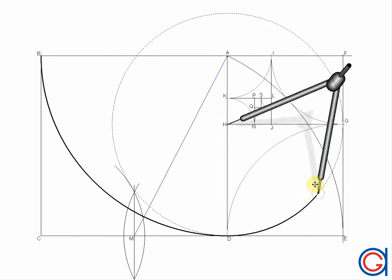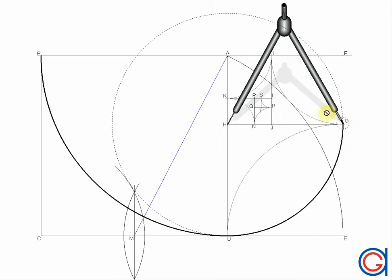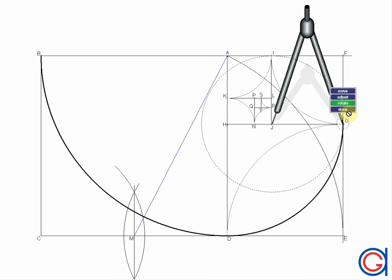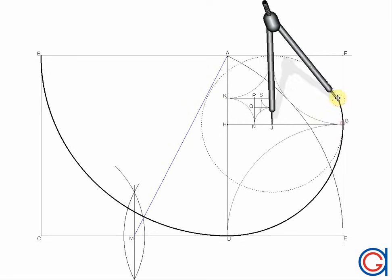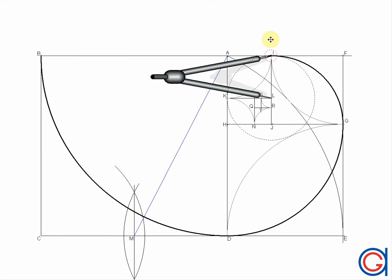Now with our compass set on point H, we will draw a spiral as far as point G, as can be seen. Now with our compass set on point J, we scribe an arc to the left from G to I.